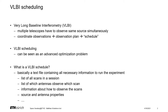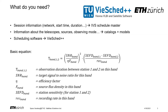So what exactly is a VLBI schedule? Basically, it's simply a text file containing all the necessary information to run the experiment. This text file is then distributed to all the telescopes and also to the correlator. It lists all the scans that will be observed, as well as which antennas are participating in which scans. Furthermore, it lists information about how to observe the scans — for example, which frequencies should be observed, which channels should be used, and so on.